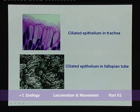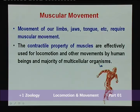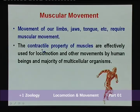Ciliated epithelium lines internal organs like the trachea and the female reproductive tract. In the trachea, cilia drive out dust particles and foreign substances inhaled with atmospheric air. In the female reproductive tract, ciliary movement helps in the movement of ova. Third, muscular movement — movement of limbs, jaws, tongue, etc., requires muscular movement due to the contractile property of muscles.